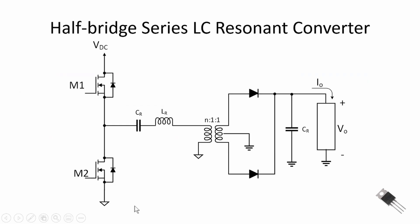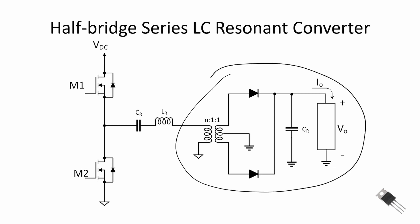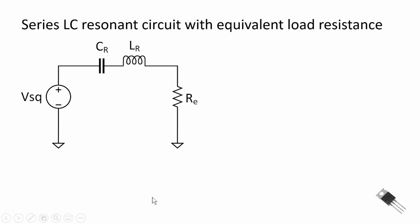Here's our circuit topology. We show a half-bridge series LC resonant converter. In another video we're going to show how we can replace the load and the transformer with an equivalent resistance R-sub-E, and for this video I'm going to assume we've already done that. Here's our equivalent circuit.